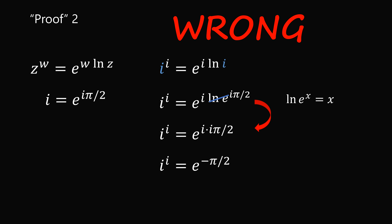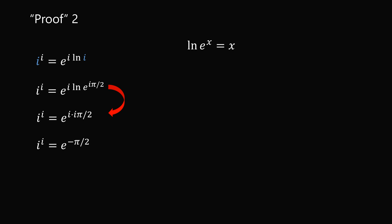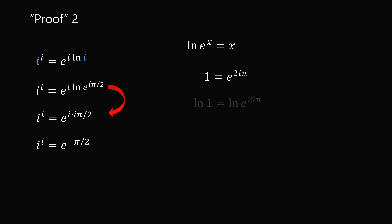The rule that the natural log of e to the x equals x is true for real numbers, but this identity may not hold when x is a complex number. For example: we've shown 1 equals e to the power of 2i pi. Taking the natural log of both sides, the natural log of 1 equals 0. If we apply the rule on the right-hand side, we get 0 equals 2i pi — which is wrong. So we cannot use the rule ln(e^x) = x for complex numbers; that is an unjustified step.